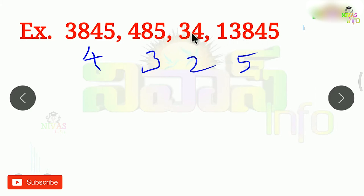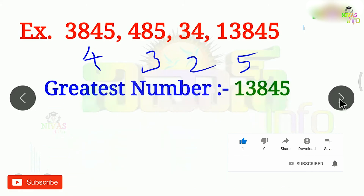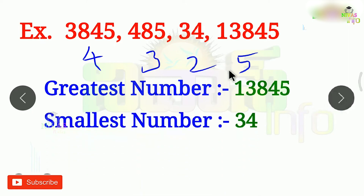This is a small number and this is a big number. The number 13,845 is the largest number. But if you have a small number like 34, it has only two digits — that is a smaller number. Here we have a small number in one example and a big number in another. Now we will start the chapter.